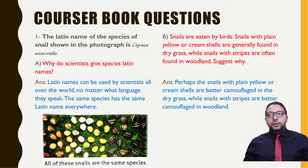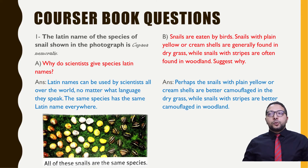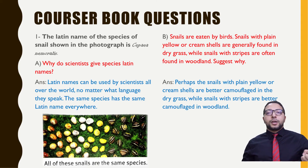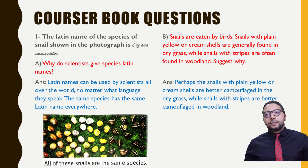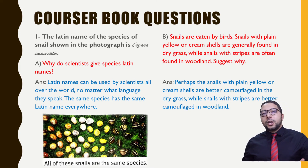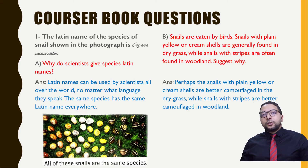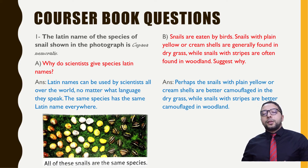Second question: snails are eaten by birds. Snails with plain yellow or cream shells are generally found in dry grass, while snails with stripes are often found in woodland. Why? It's based on camouflage — each snail is found in the place where it is better camouflaged. Yellow snails are found in dry grass because the dry grass looks yellow, while the striped snails are found in woodland because they are better camouflaged there.